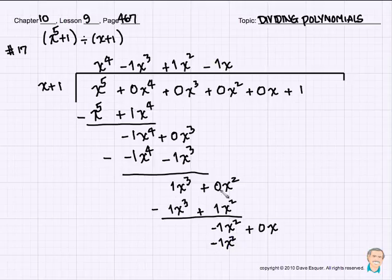Negative 1x times x is a negative 1x squared. Negative 1x times 1 is a negative 1x. Subtract again. And we end up with a 1x plus 1. And we end up with adding the 1.